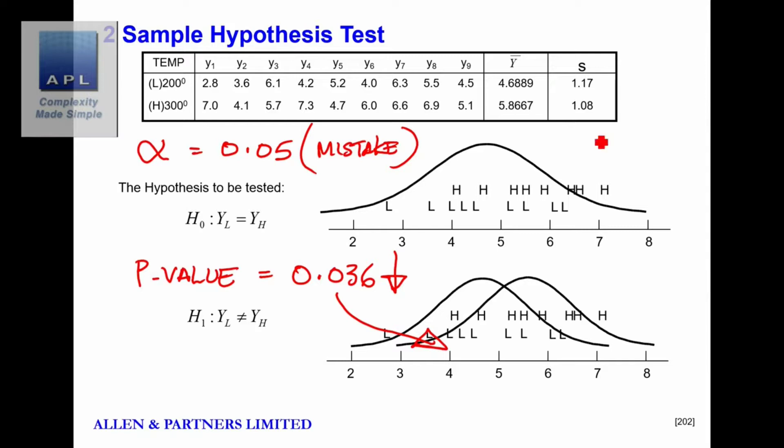Now, of course, one thing to take into account folks, is also: is this a practical difference? Because all this is doing is saying the math can see two different groups of data. It doesn't mean that this 1.2 shift, whatever this happens to be—let's say this is the hardness of the material—it doesn't mean that a shift of 1.2 is any use to you.